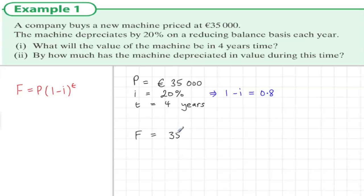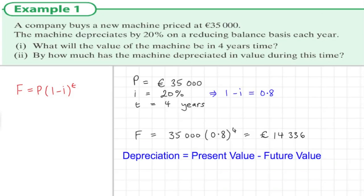So substituting this into the formula, we see that 35,000 multiplied by (1 minus 20%), which is 0.8, to the power of 4. Substitute into the calculator and we get €14,336.